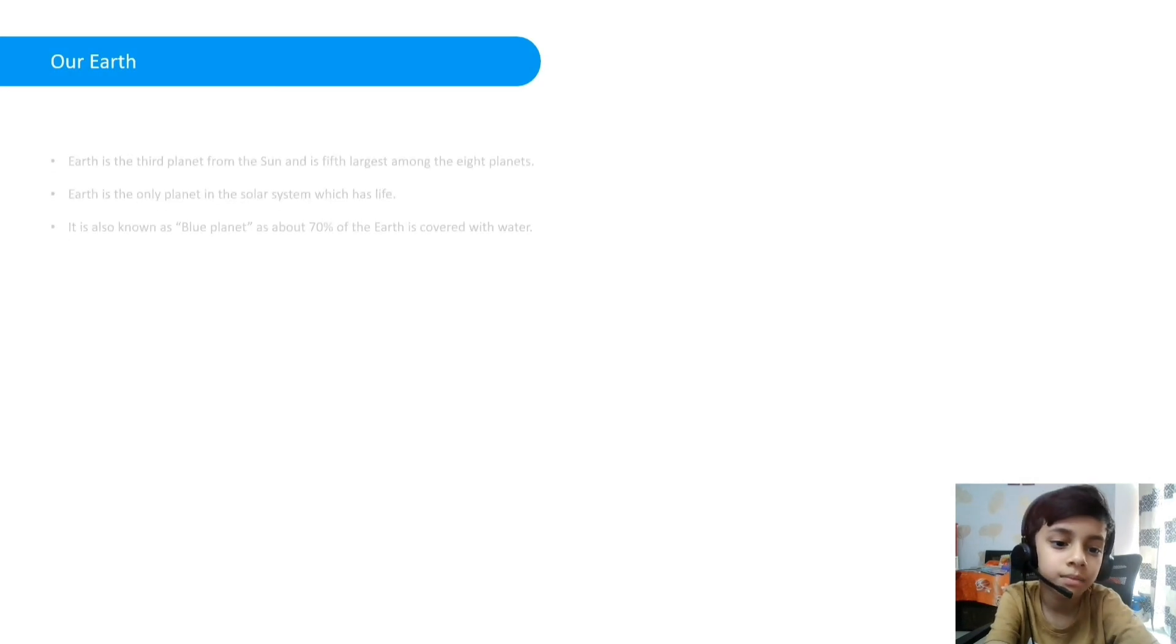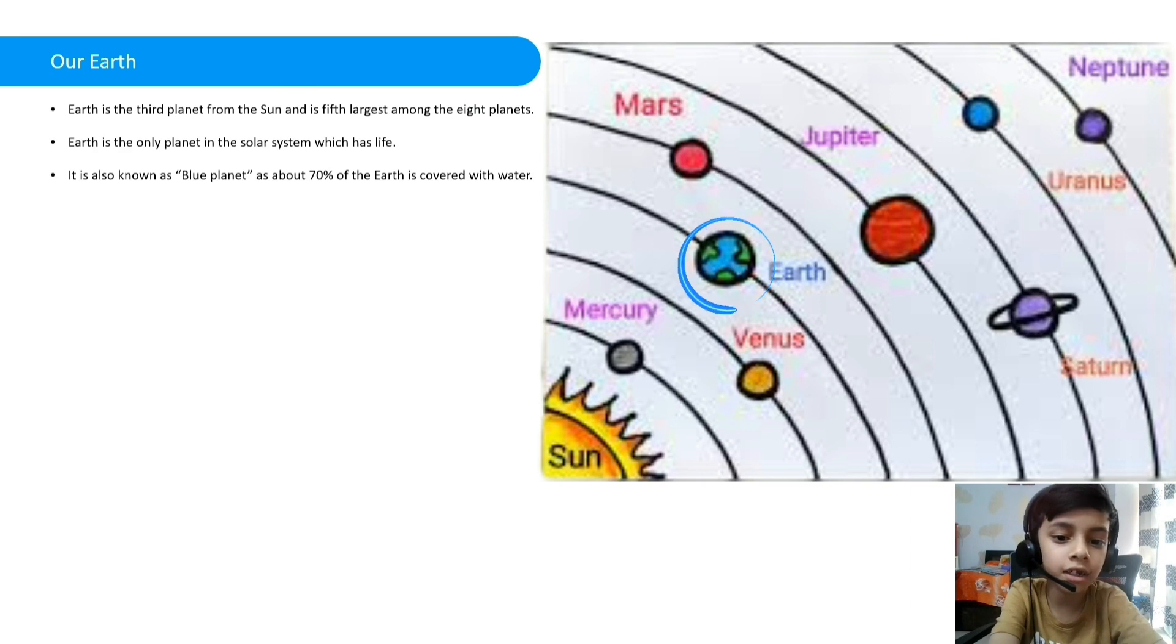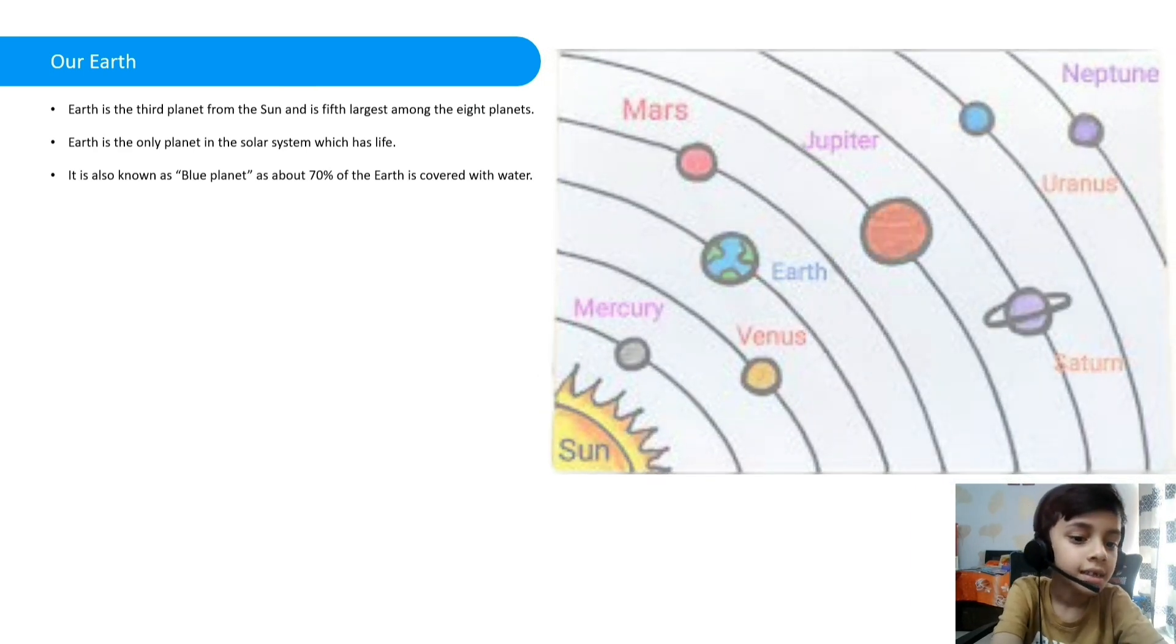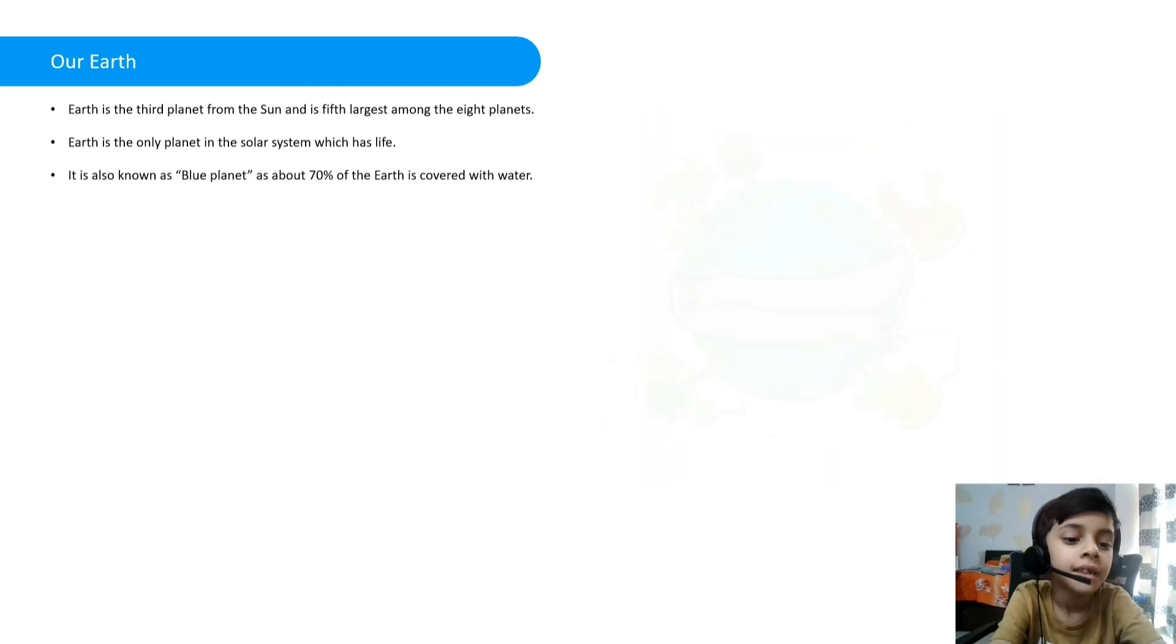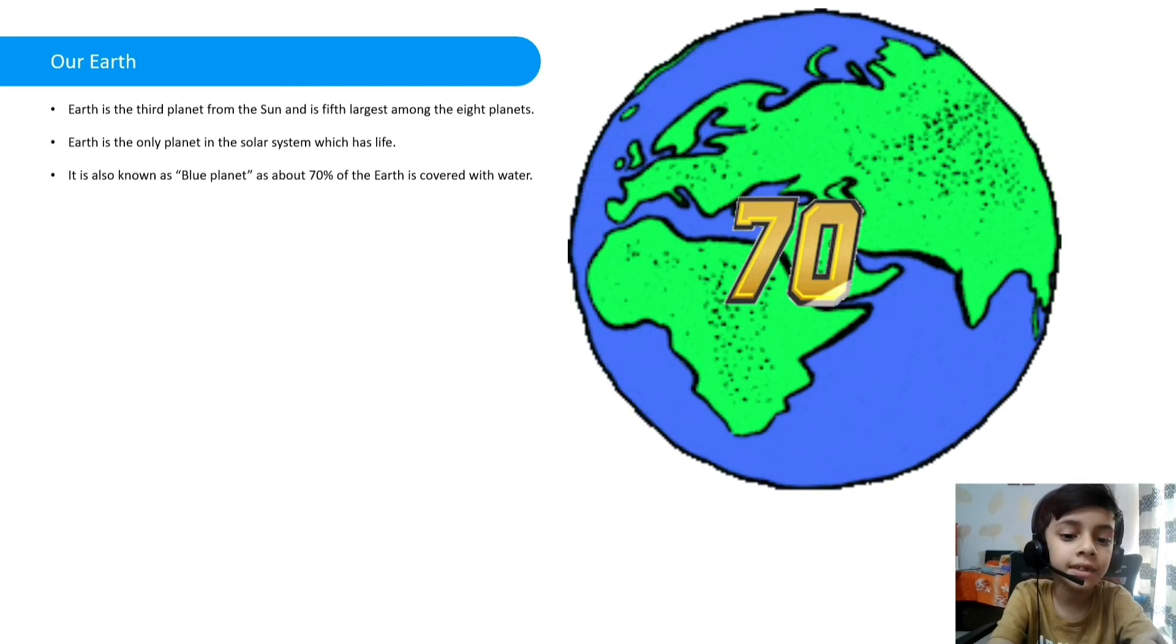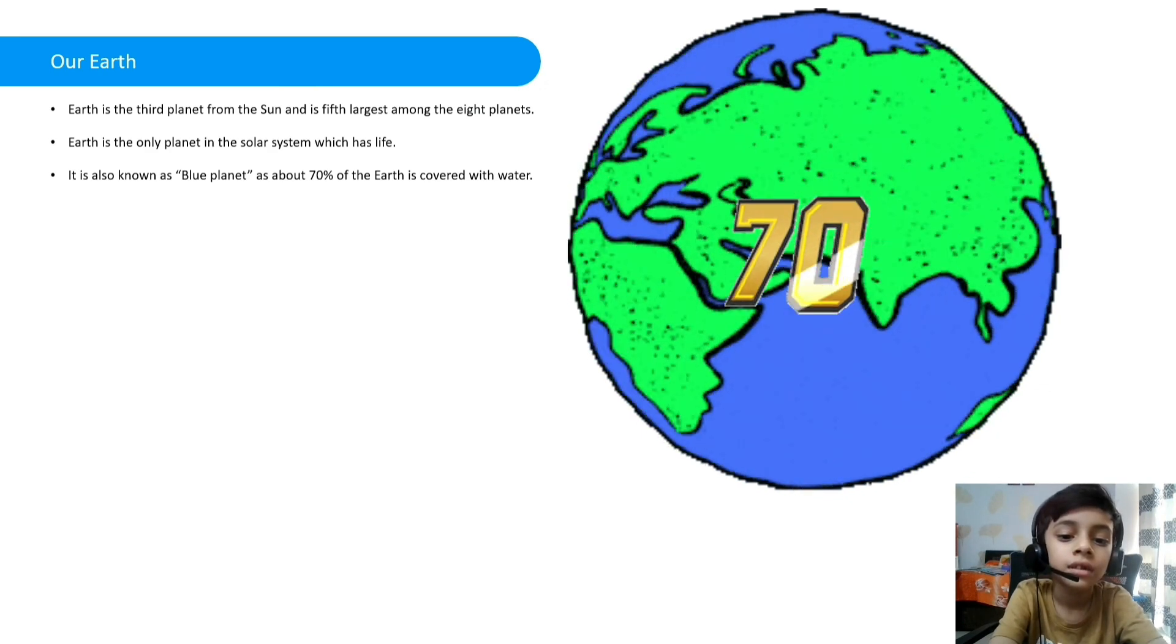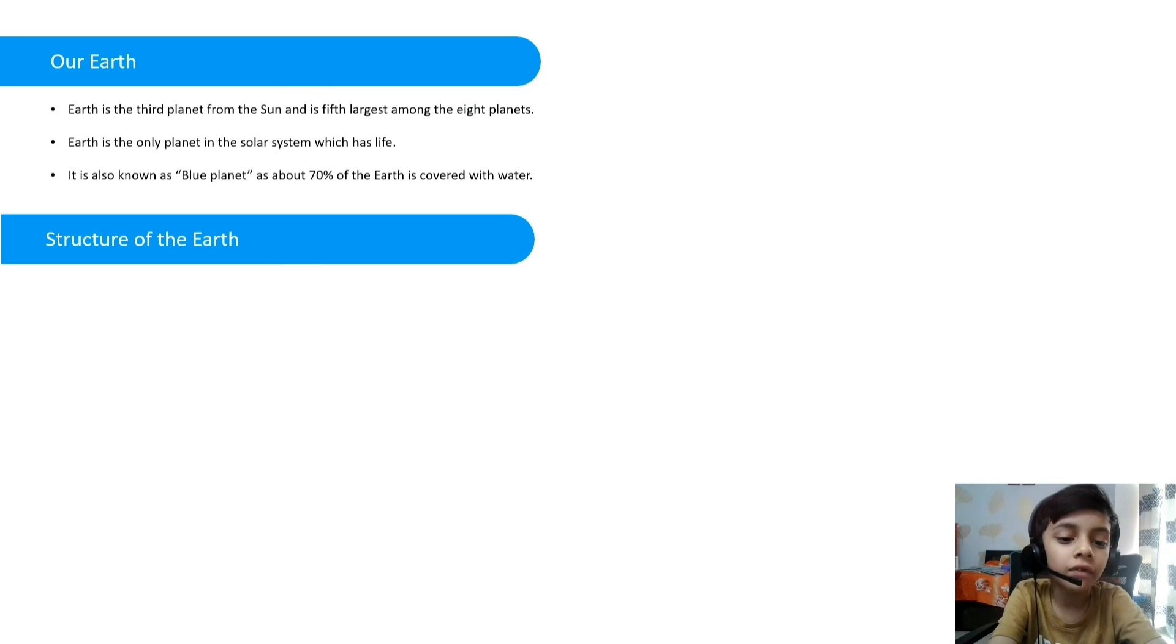Our Earth. Earth is the third planet from the sun and the fifth largest among the eight planets. Earth is the only planet in the solar system which has life. It is also known as Blue Planet, as about 70% of the Earth is covered with water.